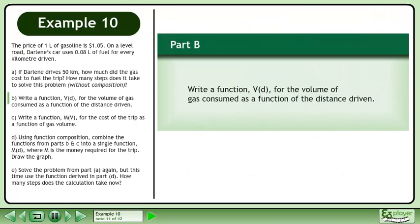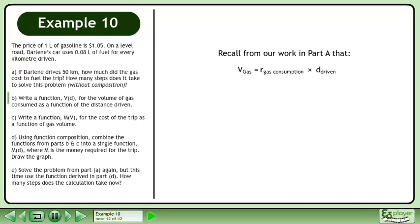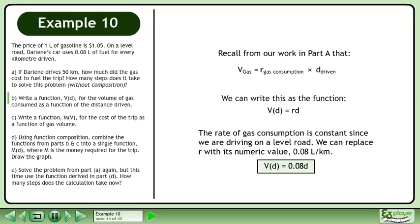Now we'll move on to part B: write a function V for the volume of gas consumed as a function of the distance driven. Recall from part A that the volume of gas required for a trip is the rate of gas consumption times the distance driven. We can write this as V equals R times D. The rate of gas consumption is constant since we are driving on a level road, so we replace R with 0.08 liters per kilometer. The function is V(D) equals 0.08D.